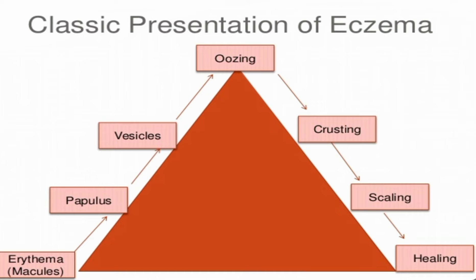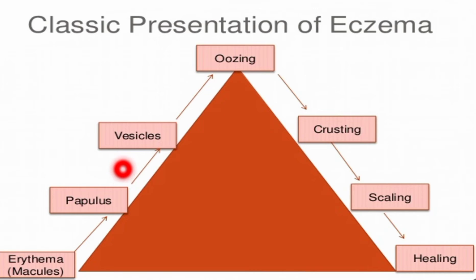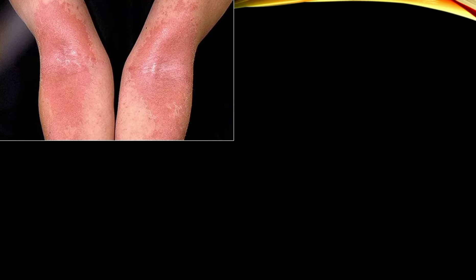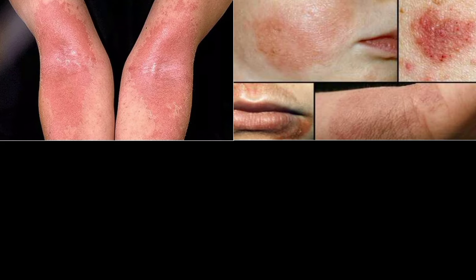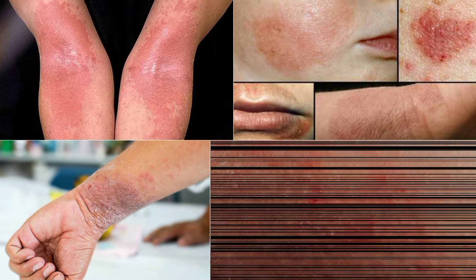This triangle image presents the progression of eczema symptoms: from erythema to papules to vesicles, followed by oozing, crusting, scaling, and healing — a classical presentation of eczema. Some images show eczema (dermatitis) on the elbow, cheek, lips, and wrist regions.